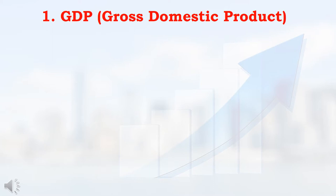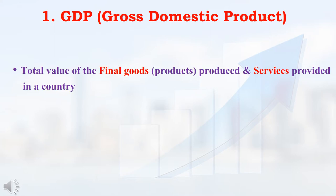The first parameter is GDP — Gross Domestic Product. First we should understand what GDP is, and then only you can easily understand how GDP will impact on the share market. GDP is nothing but the total value of the final goods produced and services provided in a country. That is called GDP.